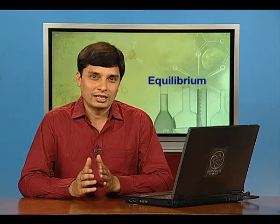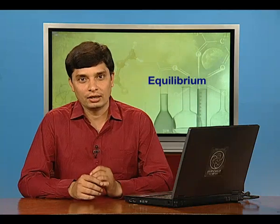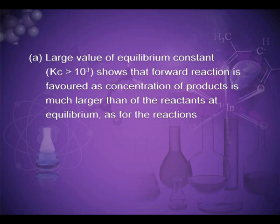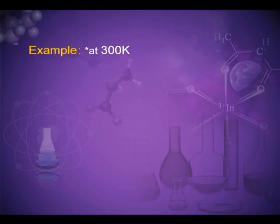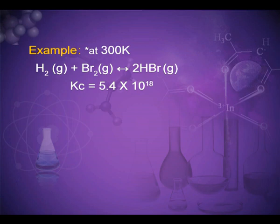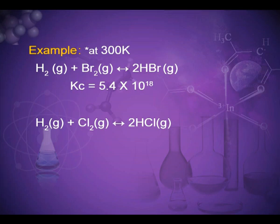It means that a high value of K is suggestive of a high concentration of products and vice versa. We can make the following generalizations: a large value of equilibrium constant where Kc is greater than 10³ shows that forward reaction is favored, as concentration of the product is much larger than that of reactants at equilibrium. For example, at 300 K, H₂ + Br₂ → 2HBr has Kc = 5.4 × 10¹⁸. Also H₂ + Cl₂ → 2HCl has Kc = 4.0 × 10³¹.